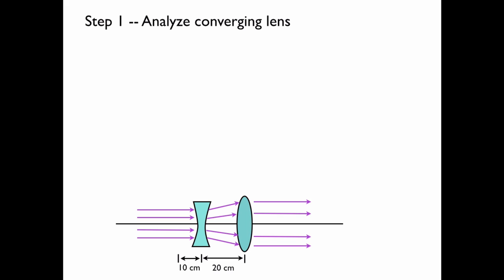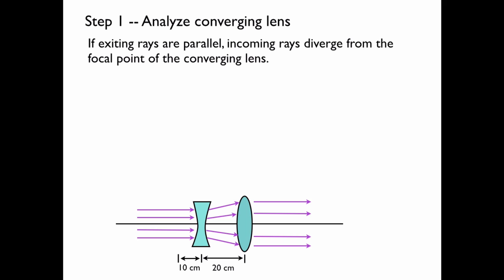First we'll analyze the converging lens. If the exiting rays are parallel, then these rays diverge from the focal point of the converging lens.